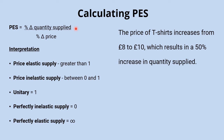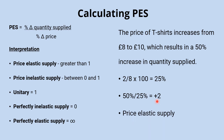For a quick worked example: imagine a T-shirt manufacturer where the price of T-shirts increases from £8 to £10, resulting in a 50% increase in quantity supplied. First, we calculate the percentage change in price, which is 25%. Then we take our 50% increase in quantity supplied, divide it by the 25% increase in price, which gives us a value of positive 2. Price elasticity of supply is always positive, so positive 2 shows we have price elastic supply for T-shirts — it's relatively easy for manufacturers to respond to that price increase by increasing their quantity supplied.